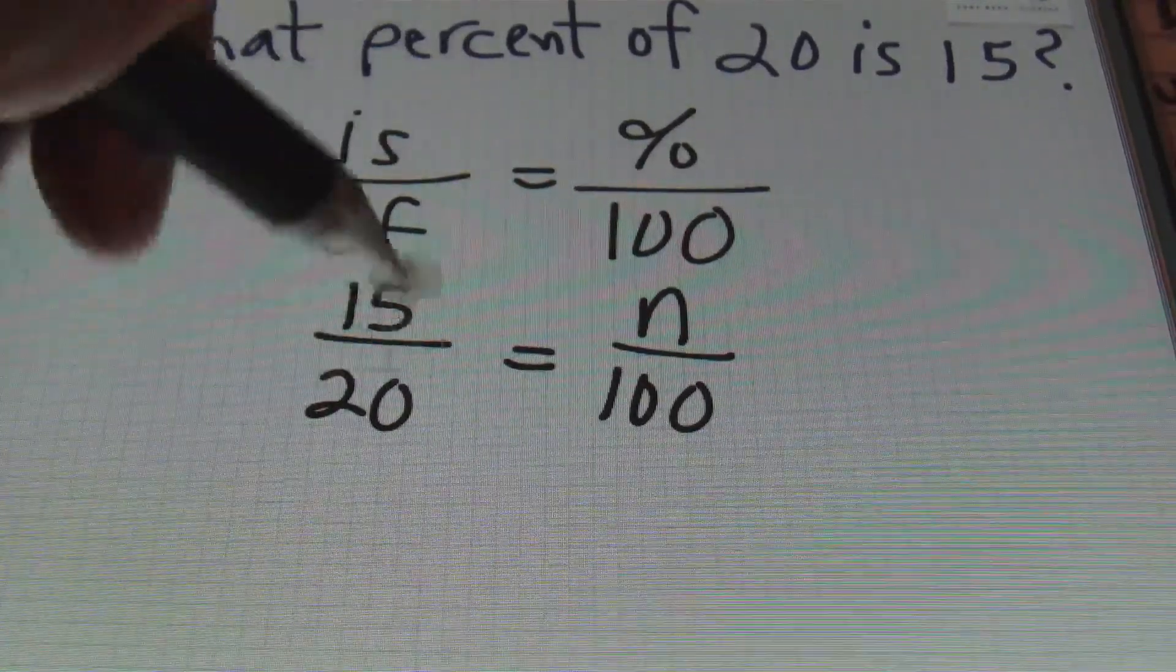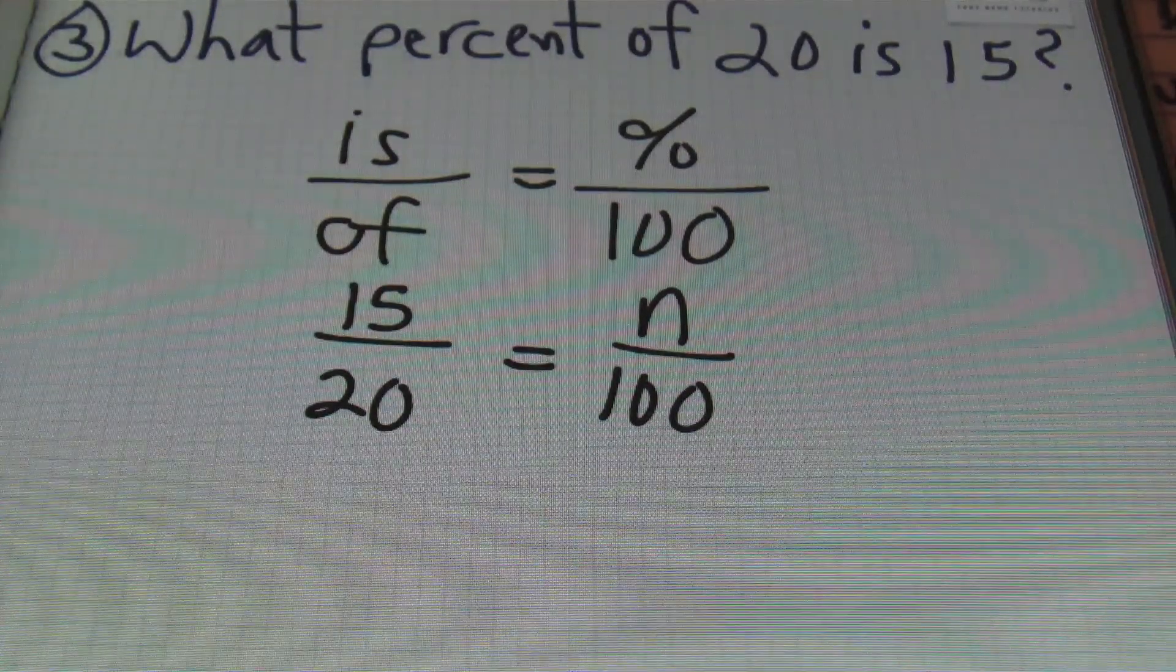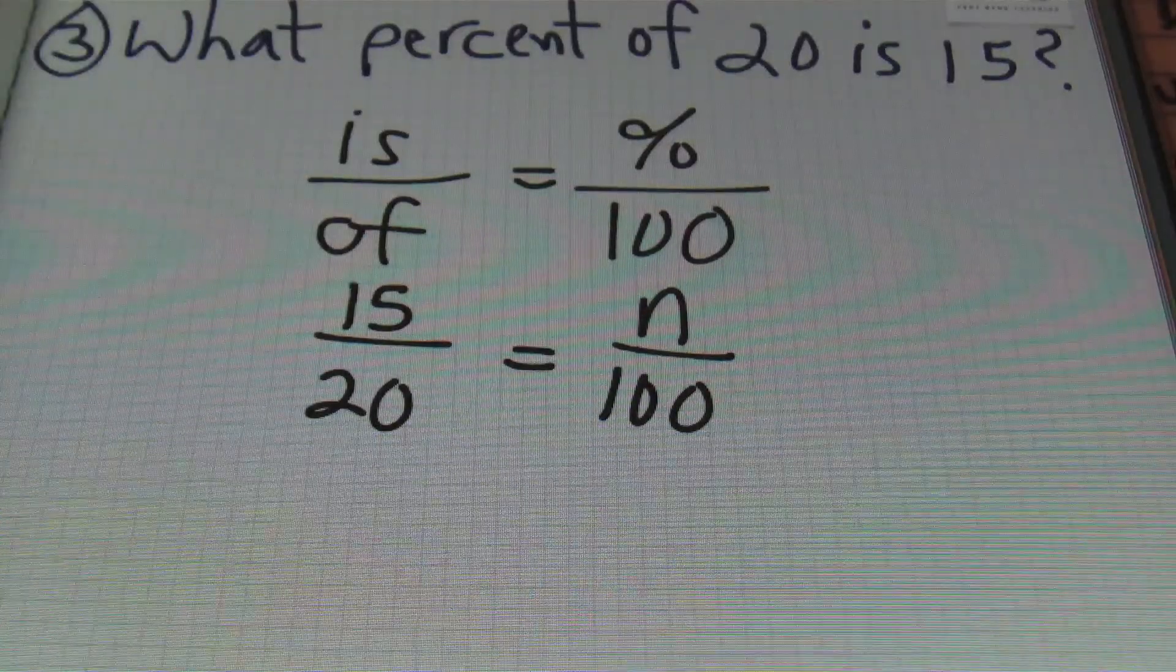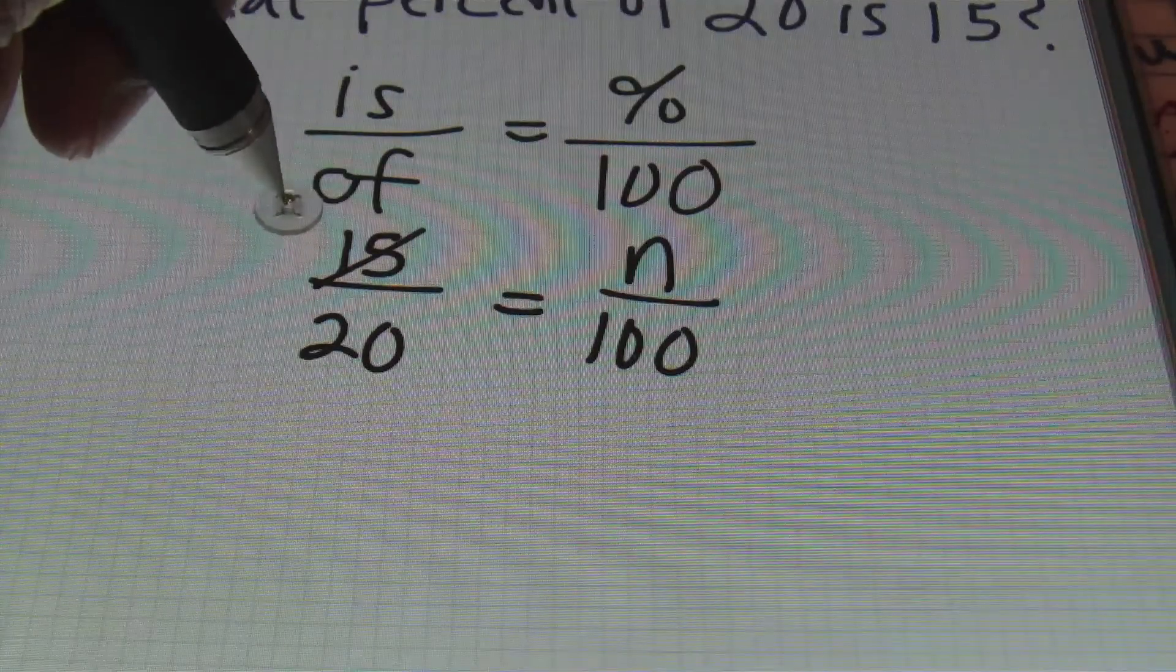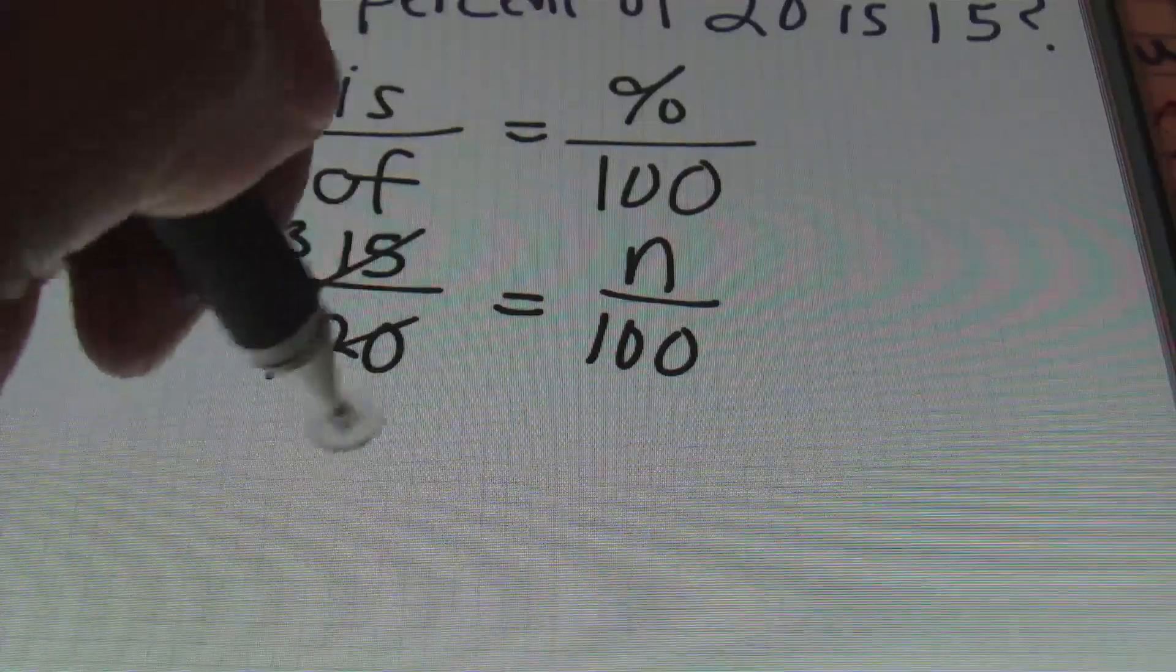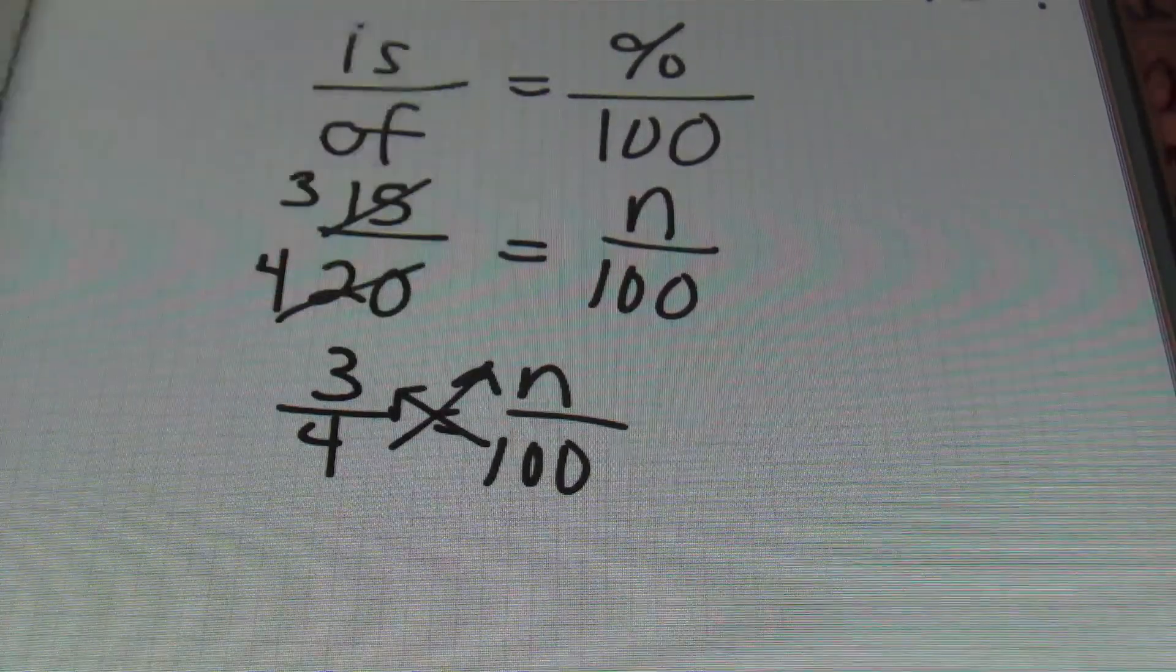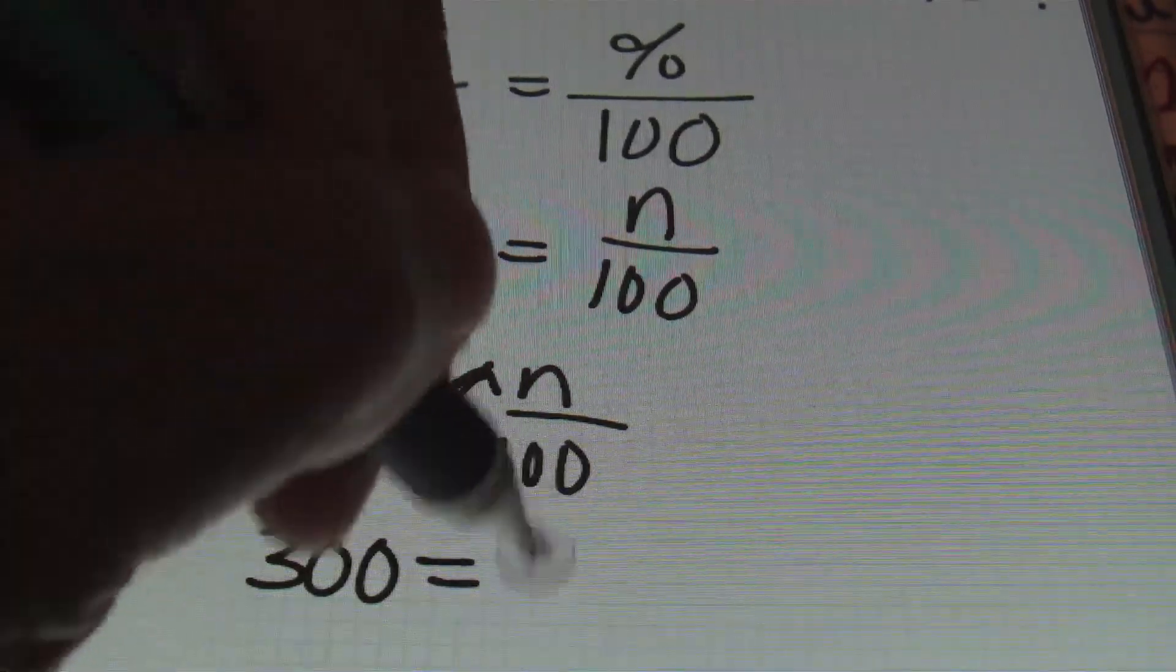As I told you before, I prefer to simplify if I have the opportunity to. Remember, you can only simplify on one side of the equal sign - you can't do it diagonally when you're cross-multiplying. So 15 and 20 can both be reduced by 5. So I'm going to rewrite this as 5 going into 15 three times, 5 going into 20 four times. So this is 3/4 equals n over 100.